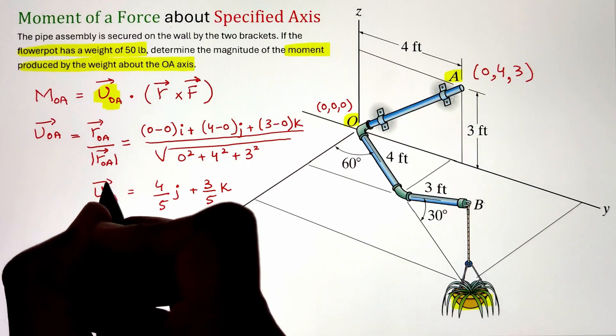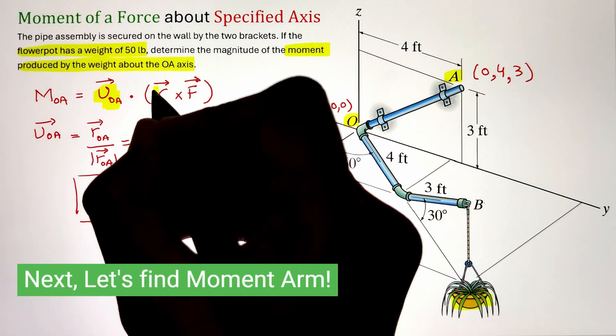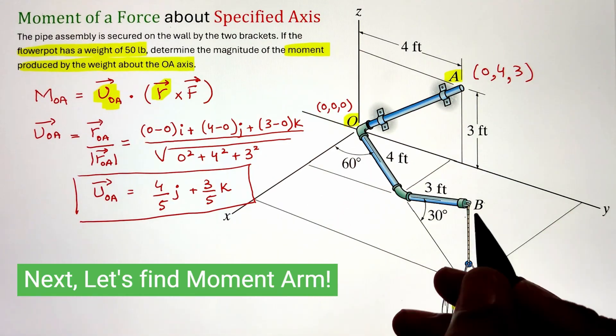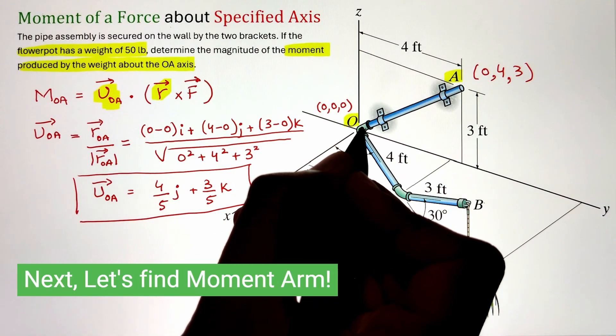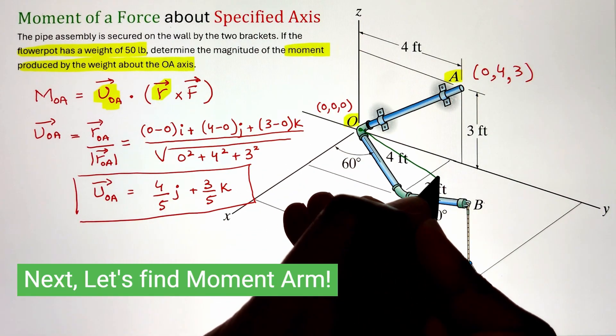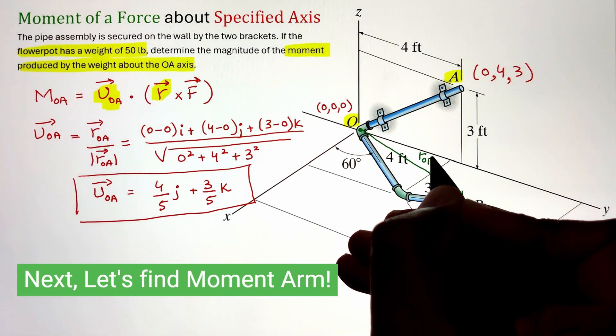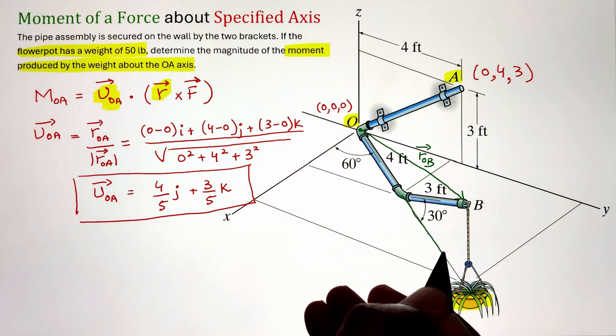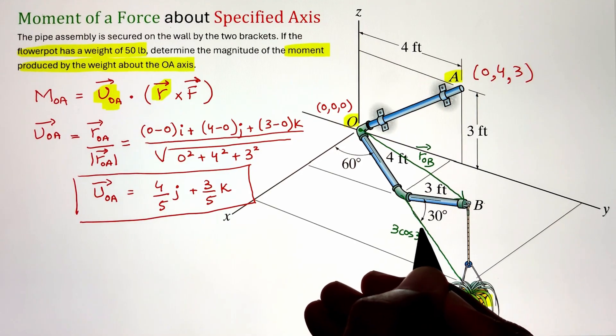Now once we have the unit vector let's figure out the position vector. For the position vector it can start from any point on the axis across which we are calculating the moment and its head will lie on any point on the line of action of force. So in this case I can start my position vector from point A and head it towards the line of action of the force at point B. This will be our moment arm.